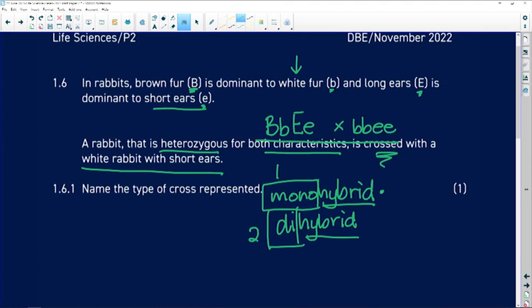One characteristic is crossed in monohybrid crosses - so we might be looking at fur color. That would be a monohybrid cross. But here we're looking at two characteristics: fur color and ear length. So we're looking at a dihybrid cross.